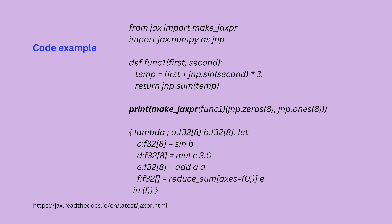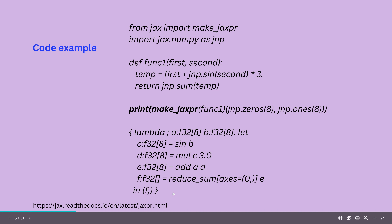If you want to see this in action, here is a code example. You have defined a function — function one, first and second — and you say the temperature is first plus JAX numpy (we call it jnp), and you calculate the sine function of the second parameter times 3, and you give back the reduced sum. If you want to see the JAX expression, you just say print make_jaxpr and you get here something we call a Lambda. You see the calculation steps of the function.